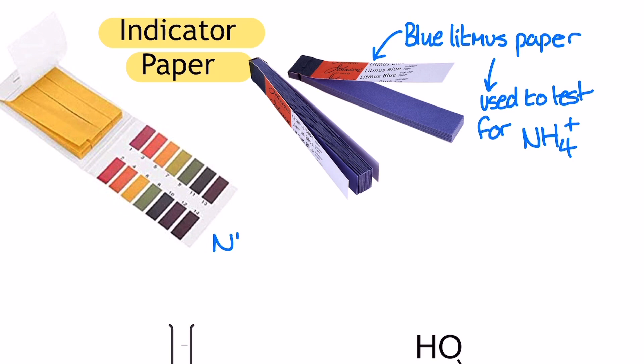In A-level, we rarely use it, but it is, for example, mentioned in the qualitative analysis section of module 3 on the OCRA specification when testing for the ammonium ion. The chemical formula for the ammonium ion is NH4+, so that's NH4 with a single positive charge. And in this test, which is conducted in a test tube, we gently heat some solution which we suspect to contain the ammonium ions with some sodium hydroxide.